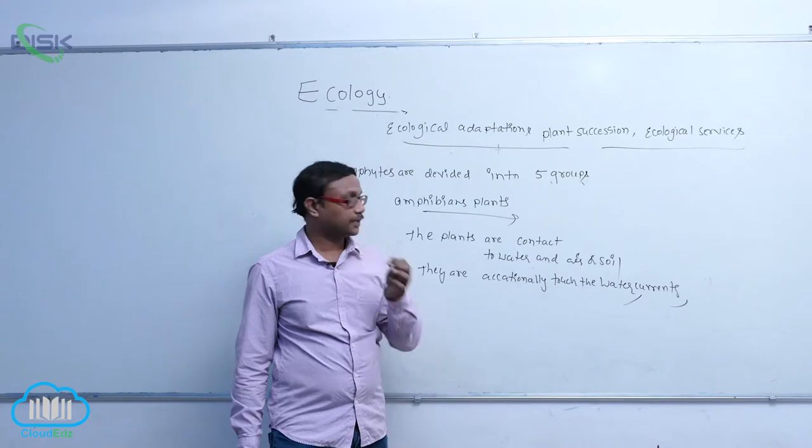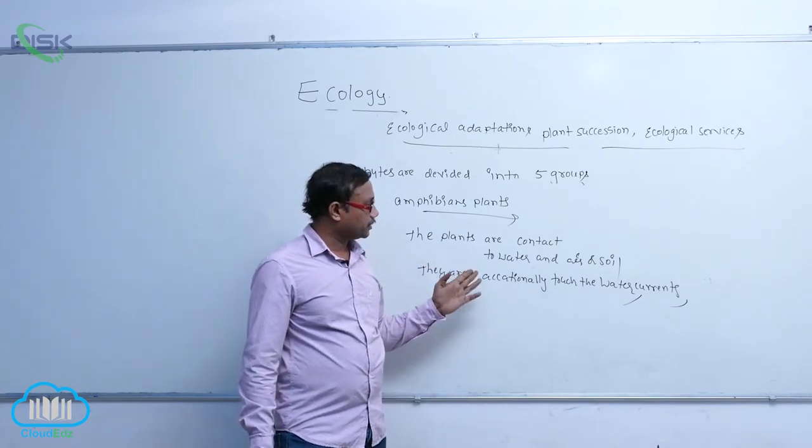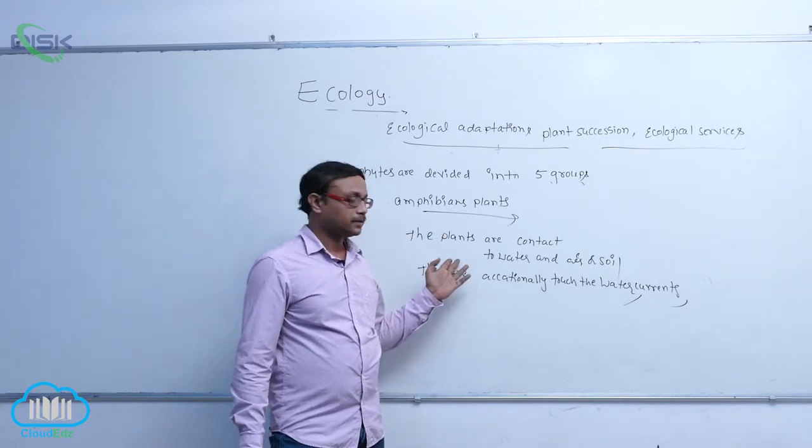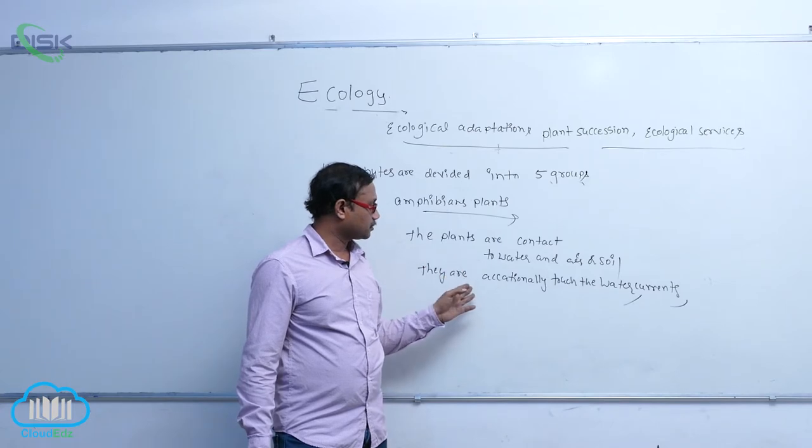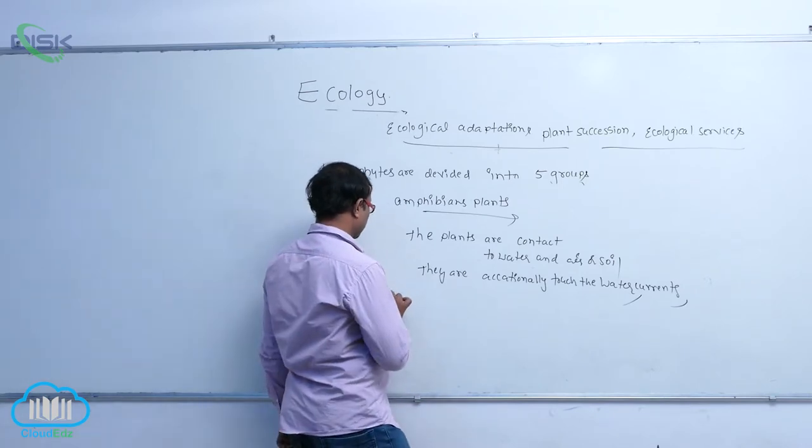So, these amphibious plants are the plants that are in contact with water and air or soil. They are known as amphibious plants. These amphibious plants occasionally touch water currents.